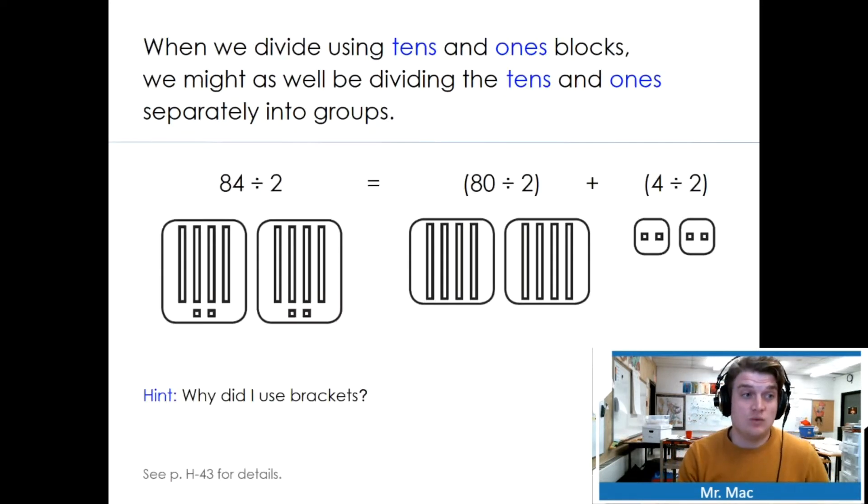When we divide using tens and ones blocks, we might as well be dividing the tens and ones separately into groups. For example, 84 divided by 2 is the same as 80 divided by 2 plus 4 divided by 2. Why did I use brackets? I used brackets to make sure that I did this first, then add them afterwards.